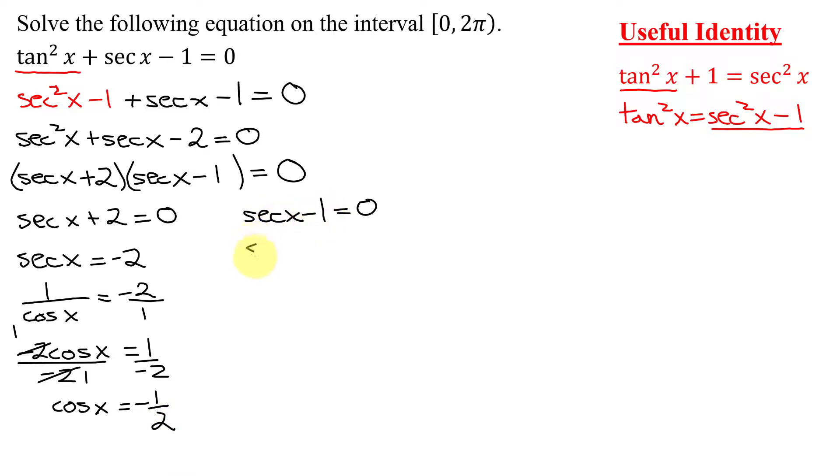Now from the second one, add 1 to both sides, I get sec x = positive 1. Using the reciprocal function, sec x is 1 over cos x = 1/1. Cross multiply, that gives you cos x = 1. So now we're ready to use our unit circle.